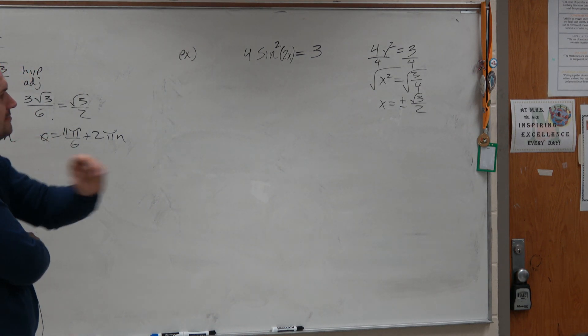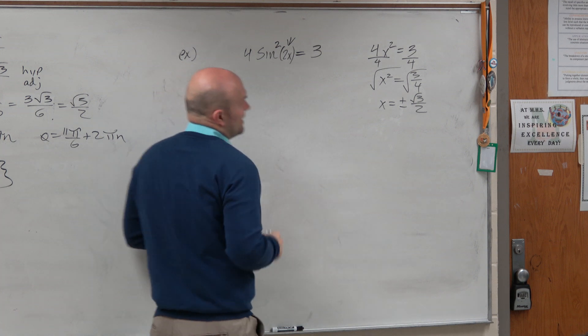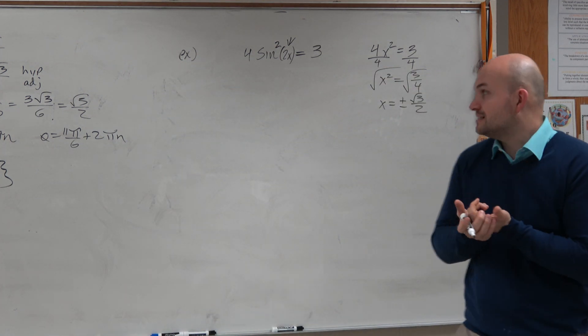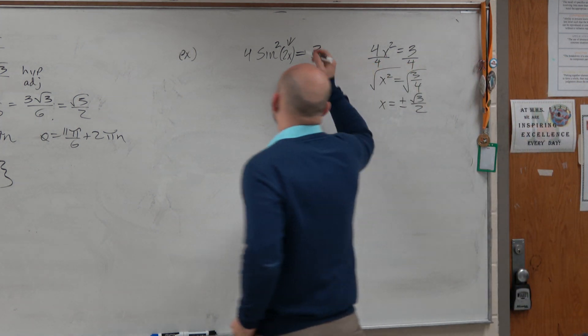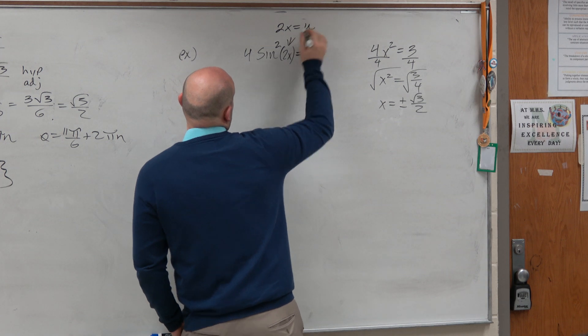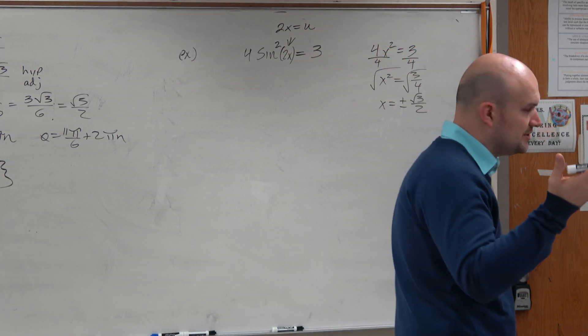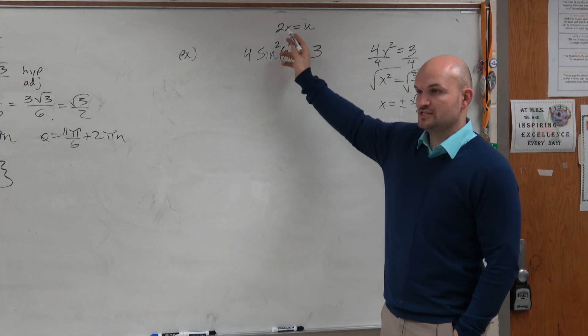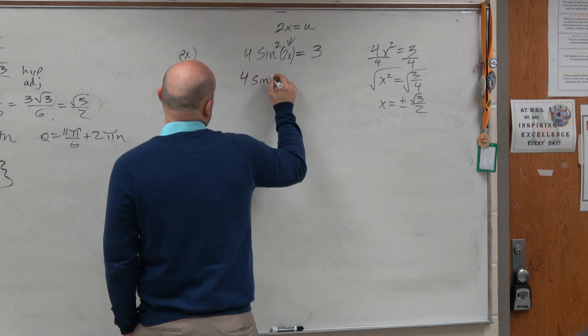All right, so that's basically what we did. Now, what are we going to do with this 2x? Because that's what we were kind of finishing off at the end. Well, I think the best thing you can do from here is just use a different variable for the time being. You could say 2x is, let's give it u. You could give it theta, beta, alpha, v, w, y, whatever you want to call it.